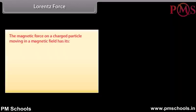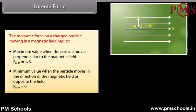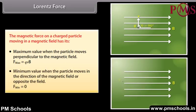The magnetic force on a charged particle moving in a magnetic field has its maximum value when the particle moves perpendicular to the magnetic field: F_max = QVB. The minimum value occurs when the particle moves in the direction of the magnetic field or opposite to it: F_min = 0.